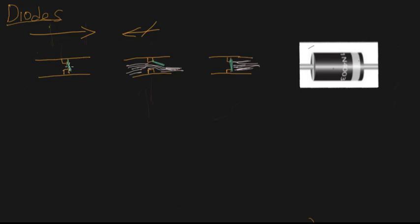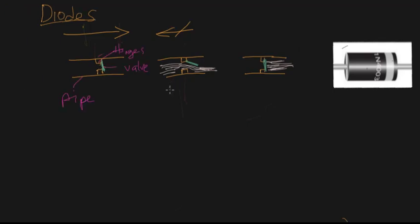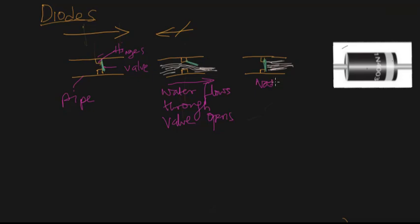The diode only operates in one direction, allowing the flow of current as the water is allowed to flow in the direction shown. Water flows only through this pipe in one direction because the valve opens up to allow the flow of water. But in the reverse direction, just as when you reverse the flow of water through the pipe, water cannot flow through the pipe.